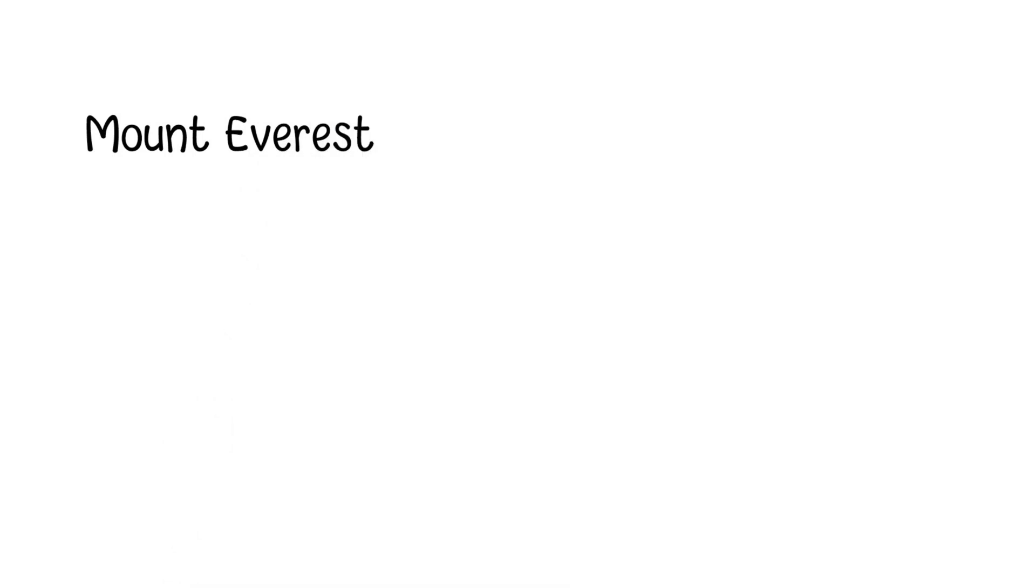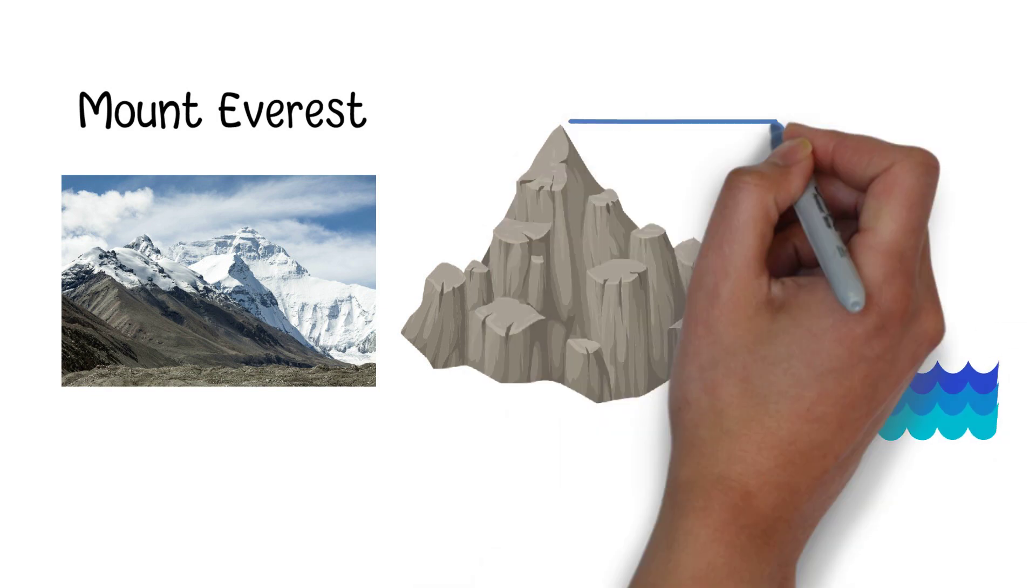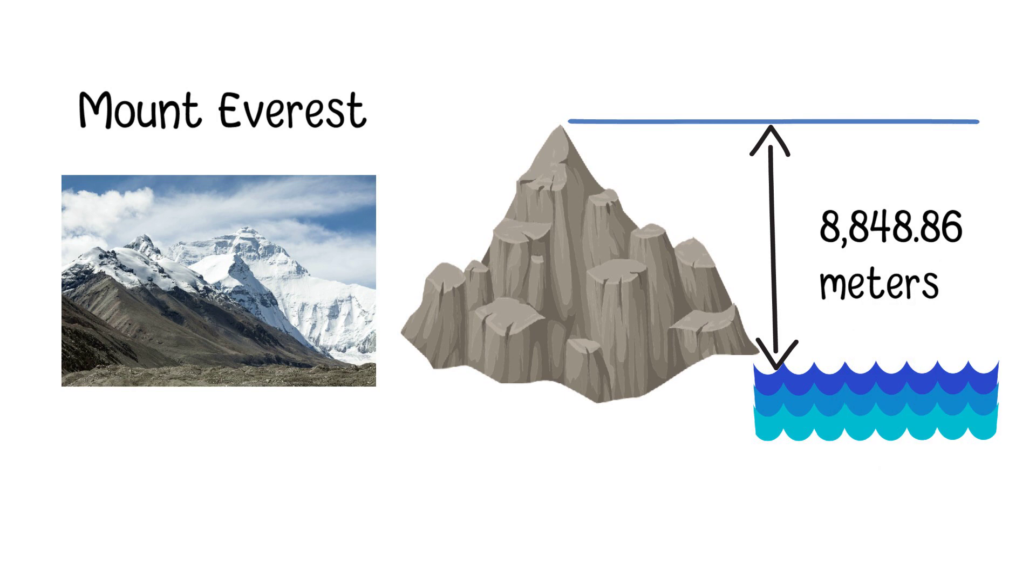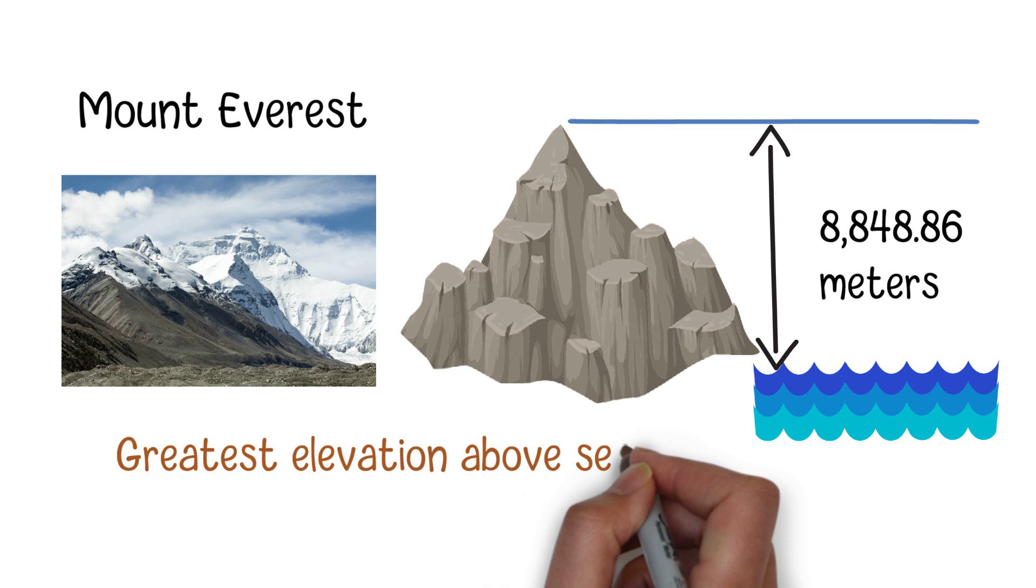When we talk about the tallest mountain on Earth, the common answer we can think of is Mount Everest. Based on the latest records, Mount Everest has an elevation of 8,848.86 meters, equivalent to 29,031.69 feet above sea level. Mount Everest earns the title of the world's highest mountain because it has the greatest elevation above sea level.